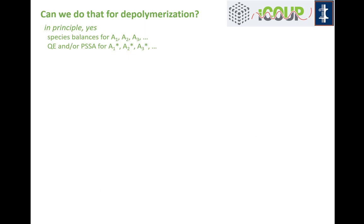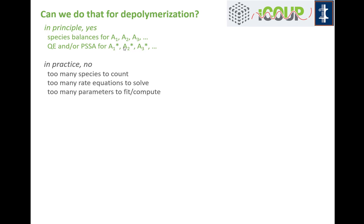Can we do that same kind of analysis for depolymerization processes? In principle yes — we can write down species balance equations for monomers, dimers, trimers, and so on, out to any arbitrary cutoff. We can apply quasi-equilibrium and pseudo-steady state approximations to each of the intermediates when they're bound to our catalyst. But in practice, we really can't: there are too many species to count, too many rate equations to solve, and too many parameters to fit or compute using ab initio calculations.